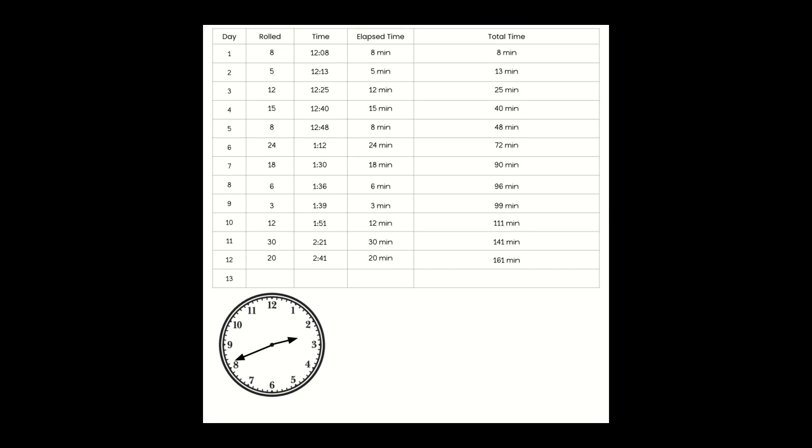Welcome back to our calendar collector. Let's go ahead and roll to see what we're going to add on today. Alright, so we're doing 4 times 2. We can skip count by 4 — 2 times 4 is 8.